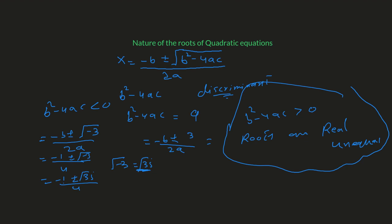Obviously those complex roots would be unequal as well, because of the plus or minus. This is the second conclusion: if the discriminant is less than zero, the roots are complex or imaginary and unequal. Third conclusion: if b-squared minus 4ac equals zero, the entire term under the radical — including the radical itself — becomes zero, and the plus or minus does not affect the roots, so the roots are equal.